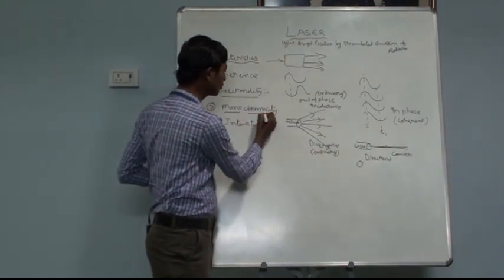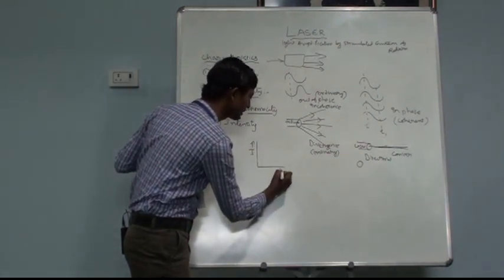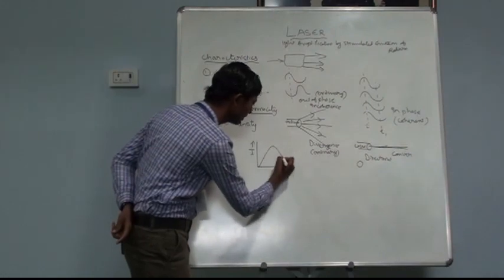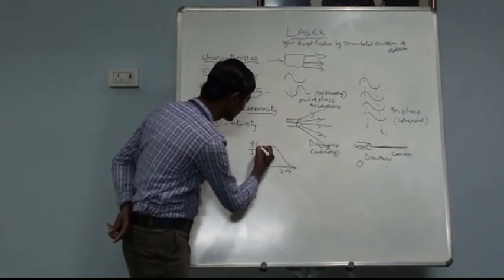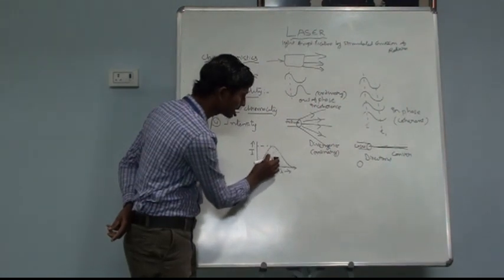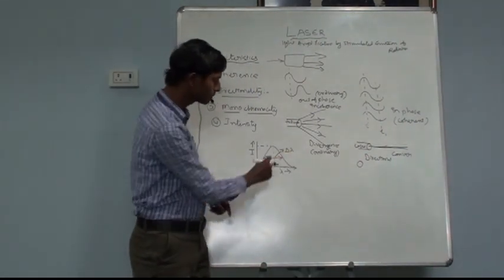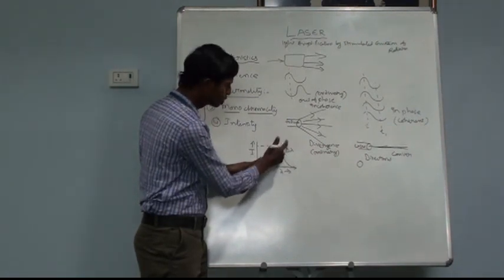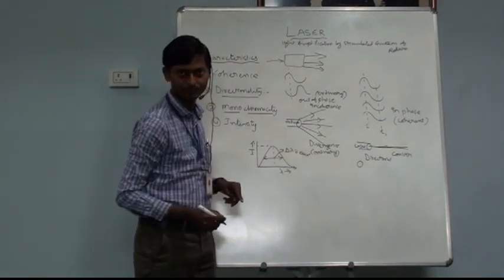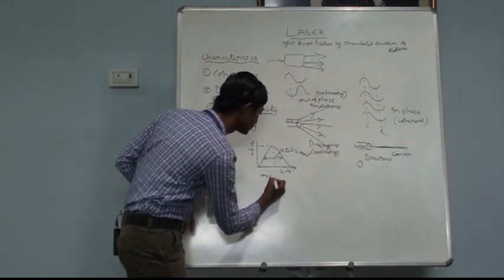The next property is monochromaticity. Mono means single, and chromatic means wavelength. If we take a graph of intensity on the y-axis versus wavelength lambda on the x-axis, for an ordinary source of light the spreading of wavelength on either side of maximum intensity is known as the bandwidth delta lambda. The bandwidth of an ordinary source of light is generally around 1000 angstroms — the bandwidth is very much greater.